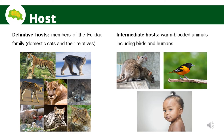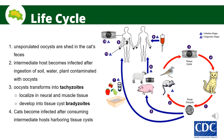The only known definitive host for Toxoplasma gondii are members of the Felidae family: domestic cats and their relatives. Toxoplasma gondii can reproduce sexually in the stomachs of cats and are released into the environment through cat feces. The intermediate hosts are warm-blooded animals, mainly rodents, birds, and humans, in which the parasites are only able to reproduce asexually. The life cycle of Toxoplasma gondii shows the definitive host as cats and the different modes of transmission to infect humans.